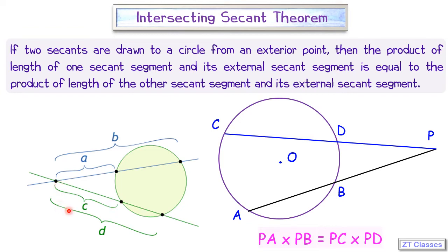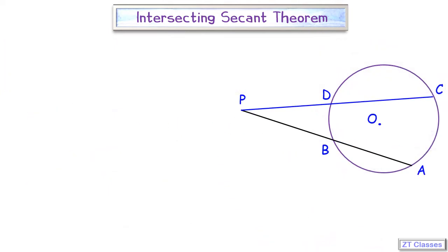That's intersecting secant theorem. Let's see the proof of this theorem. Here given to us is two secants AB and CD in a circle.